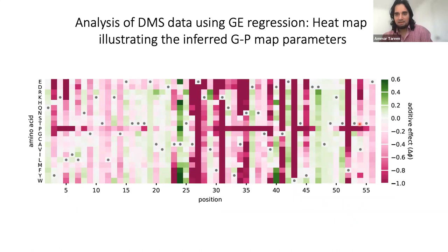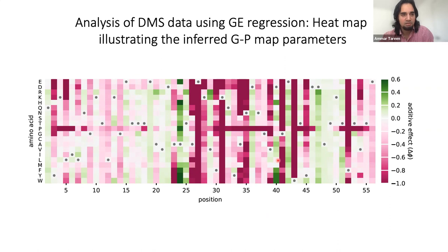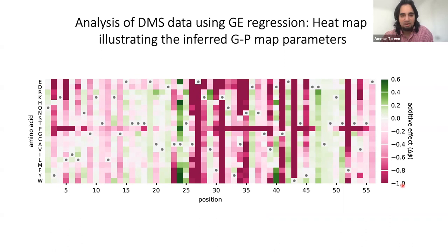Having accounted for this nonlinear mapping, I can now look at the parameters of the underlying GPMAP, which indicate mutational effects. Colors indicate additive effects for each amino acid residue at each of the 55 positions of GB1 that were mutagenized — wild-type residues are shown by gray dots, red colors indicate deleterious mutations, and green indicates beneficial mutations for binding. Notably, proline shows a streak of deleterious mutations, which gives confidence in the model. This is a phenomenological model, meaning the mutational effects have arbitrary units.